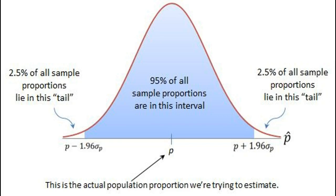Suppose we wanted to construct a 95% confidence interval for a population proportion. Recall from Chapter 6 that approximately 95% of a normal distribution falls within two standard deviations from the mean — the empirical rule. More precisely, the interval given by the mean plus or minus 1.96 standard deviations includes exactly 95% of the normal distribution. Since the sampling distribution of the sample proportion is approximately normal, with probability 0.95, the sample proportion falls within about 1.96 standard deviations of the population proportion. Once the sample is selected, if the sample proportion falls within 1.96 standard deviations of the population proportion, then the interval from the sample proportion minus 1.96 times the standard deviation to the sample proportion plus 1.96 times the standard deviation contains the population proportion — this is a 95% confidence interval.